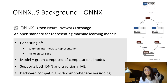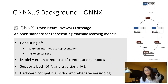Similar to TensorFlow.js, ONNX.js is another framework providing the capability of running machine learning models with JavaScript. The model format ONNX.js supports is ONNX. ONNX stands for Open Neural Network Exchange — it is an open standard for representing machine learning models, defining three things: an extensible computation graph, standard data types, and built-in operators.